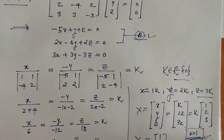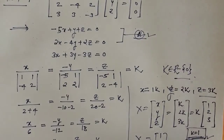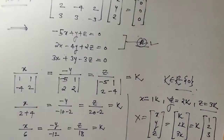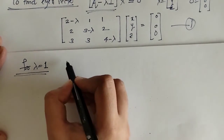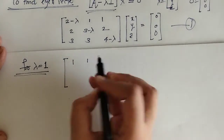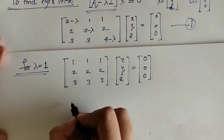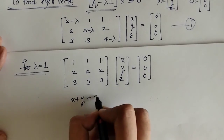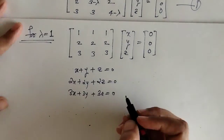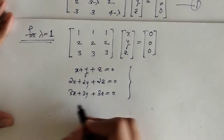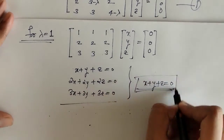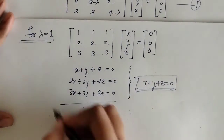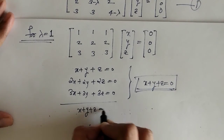Similarly, we have to find eigenvectors for the repeated eigenvalue lambda equals 1. When we put lambda equals 1 in the matrix equation and simplify, we find that all three rows reduce to the same equation: x plus y plus z equals 0.